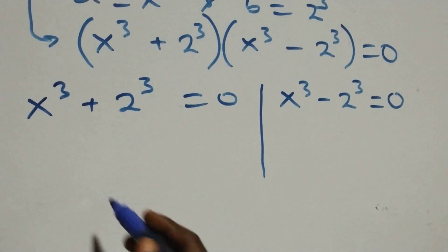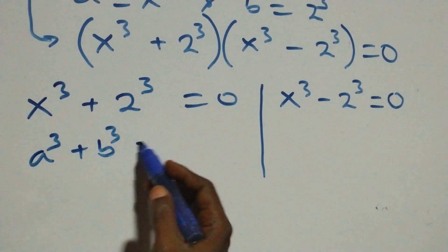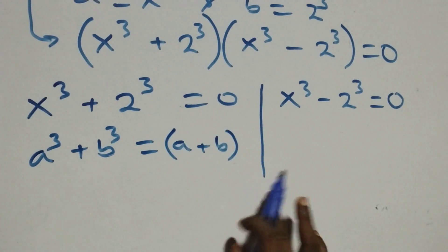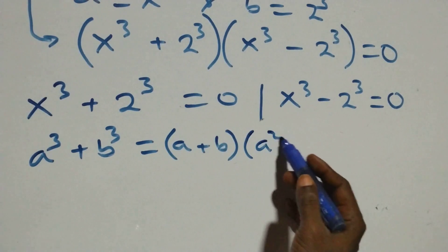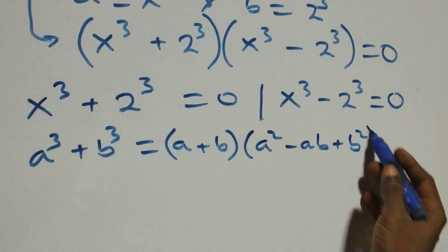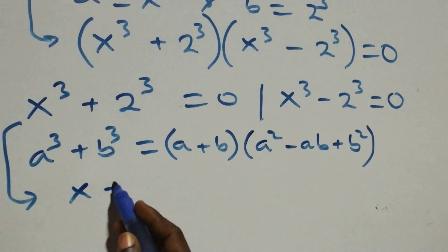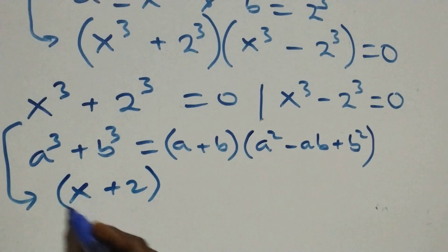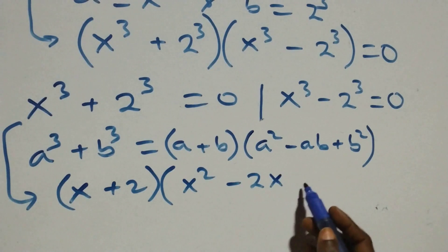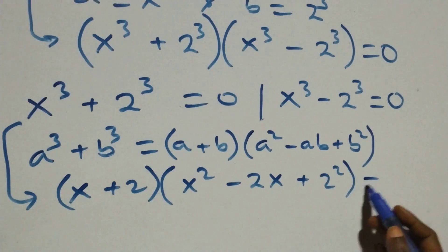Solving the first case, we apply a³ + b³ = (a + b)(a² - ab + b²). So x³ + 2³ becomes (x + 2)(x² - 2x + 2²) = 0.